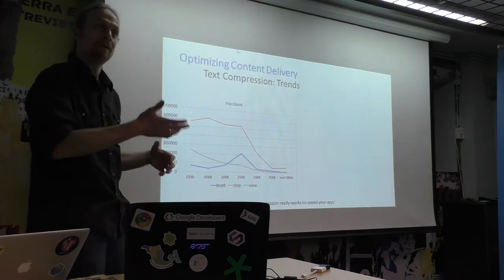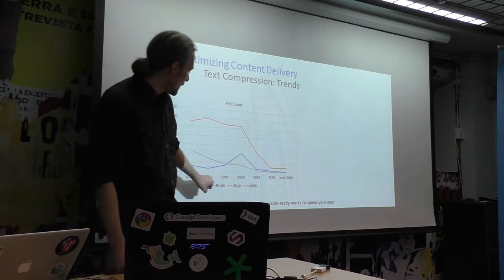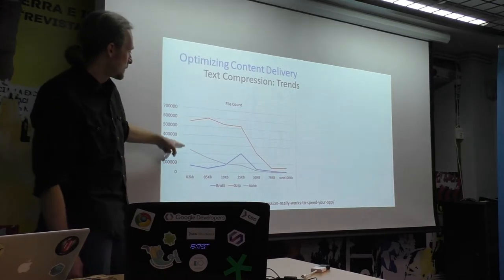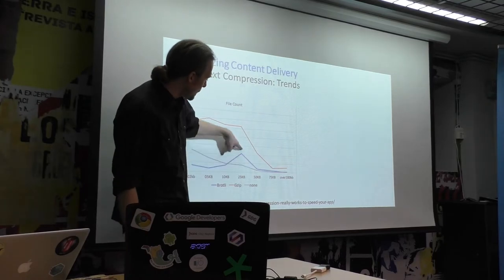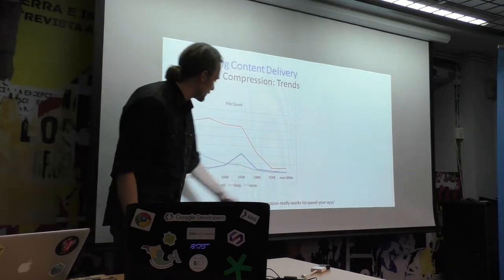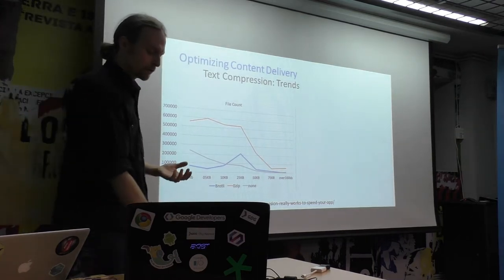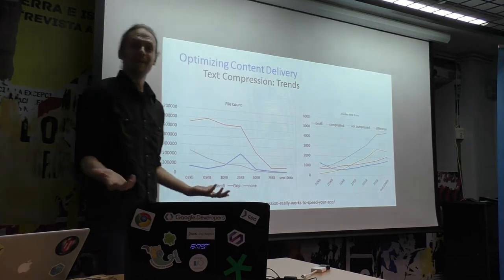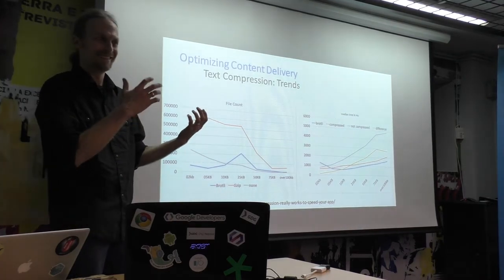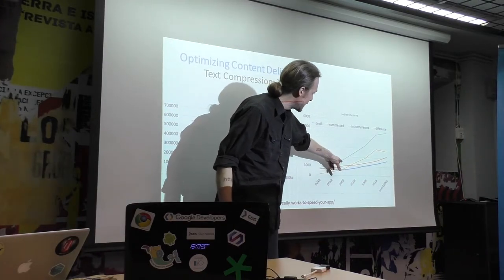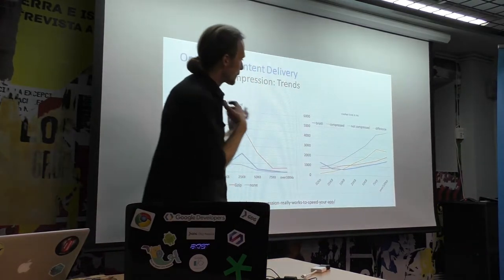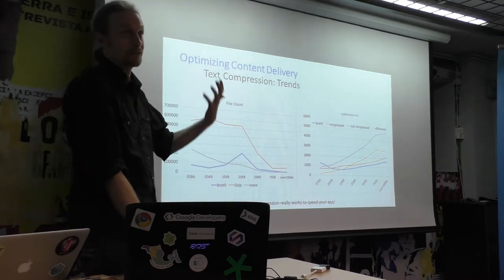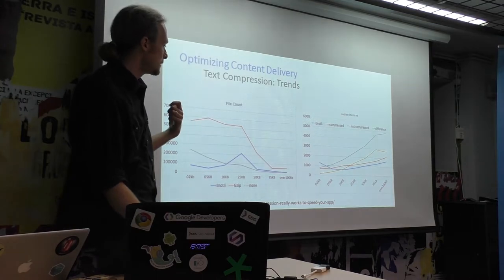Going back to the HTTP Archive data, we can see different size text files from 2 kilobytes out to 100 kilobytes. Most files are sent with gzip; Brotli is used for some. There are also a number of files that aren't compressed at all. What we can see is that files that aren't compressed take a lot longer to download even at the same size — a 10K uncompressed file takes longer than a 10K compressed file. It makes sense to compress these files because it leads to faster experiences for both web and native.